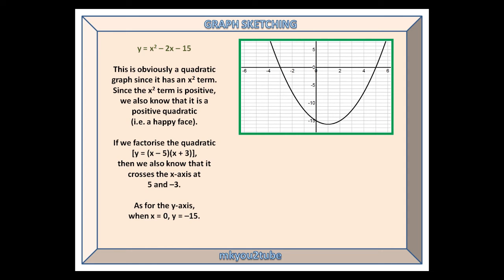If we factorise the quadratic, we get y equals (x minus 5) times (x plus 3), which crosses the x-axis at 5 and minus 3. As for the y-axis, when x is 0, y is minus 15.